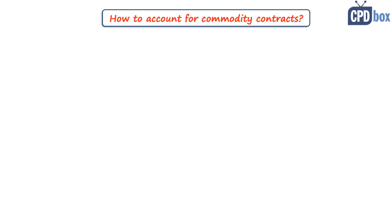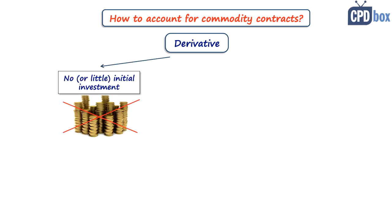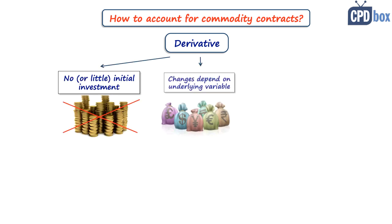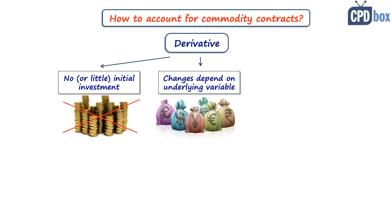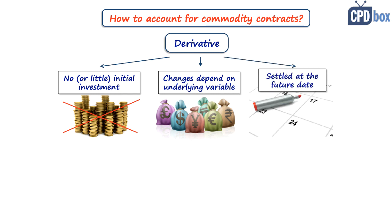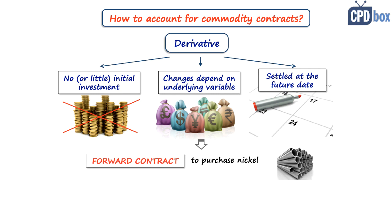Delivery postponed to a future time, net cash settlement possible, fixed prices agreed up front — that smells like a derivative, isn't it? It meets all three conditions: there is no initial investment, the contract is based on an underlying variable which is the price of nickel, and it will be settled at a future date. Indeed, it is a commodity derivative — it's like a forward contract to purchase nickel.